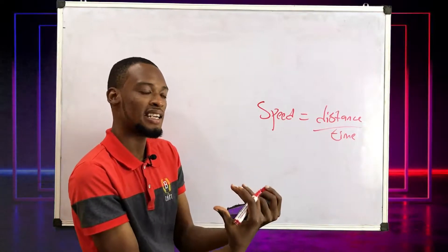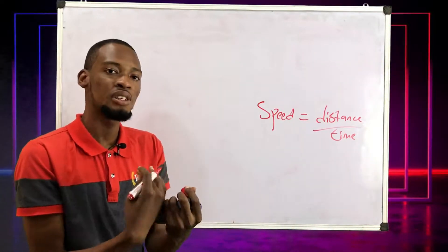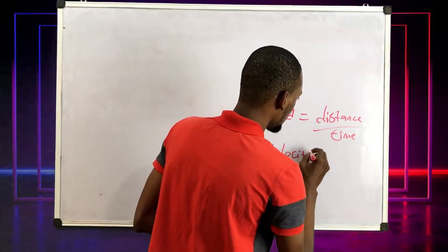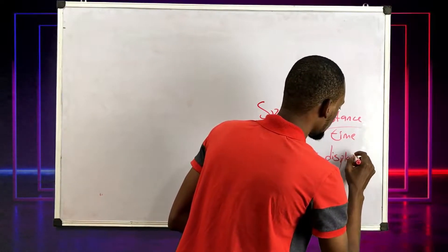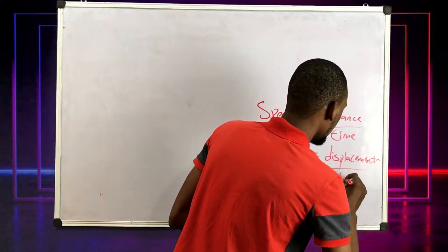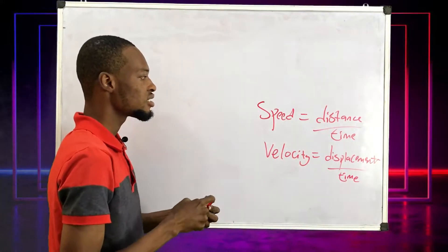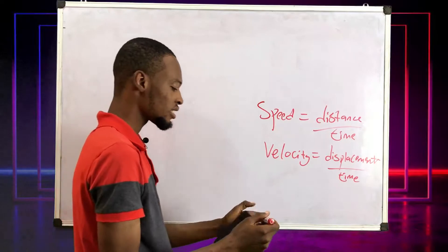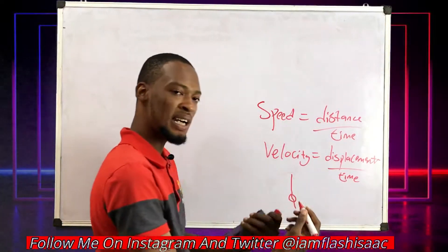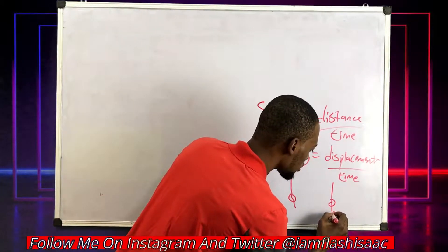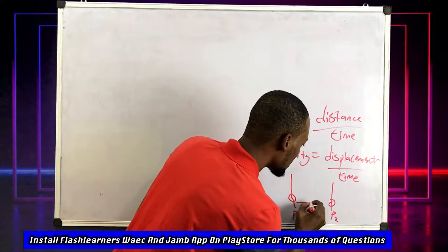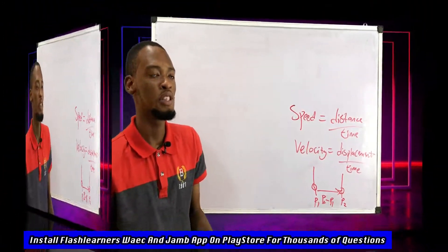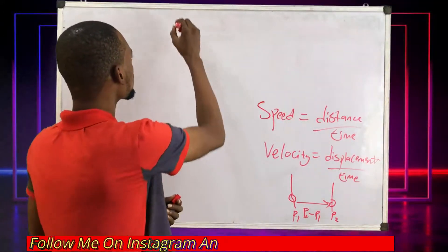Velocity is displacement over time, which is change in position. Position is a point where an object is. If I'm standing here, this is my position. If I move to this place, this is position two. Change in position, which is position two minus position one, is what our displacement is.